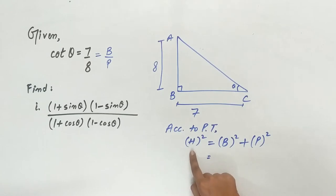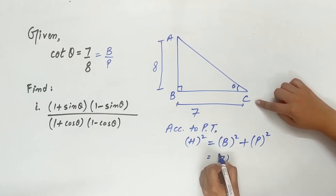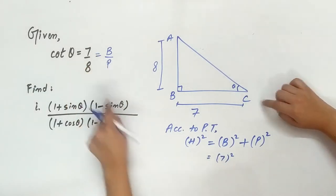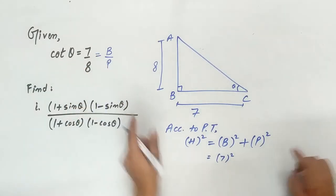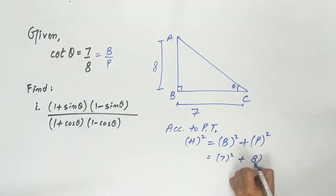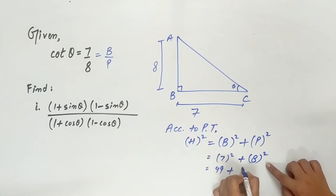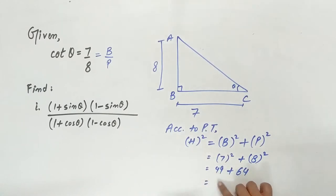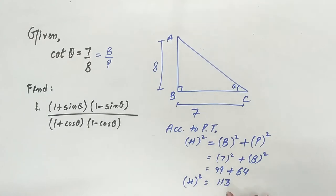Pythagoras theorem says hypotenuse square is equal to base square plus perpendicular square. Base is 7, perpendicular is 8. 7 square is 49, 8 square is 64. 49 plus 64 is? Hypotenuse square is 113.